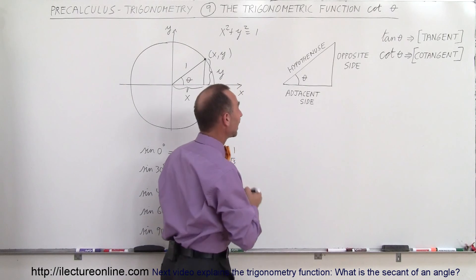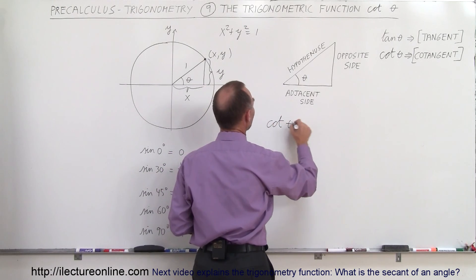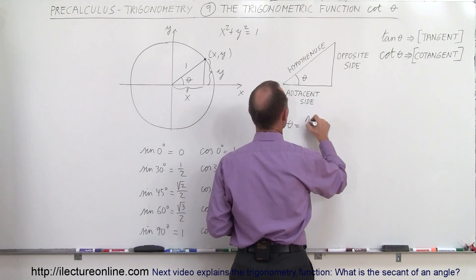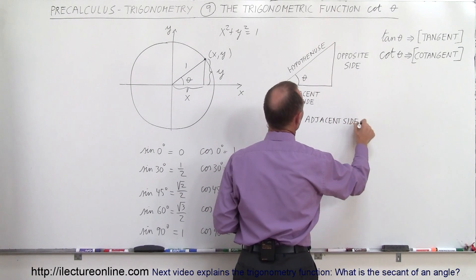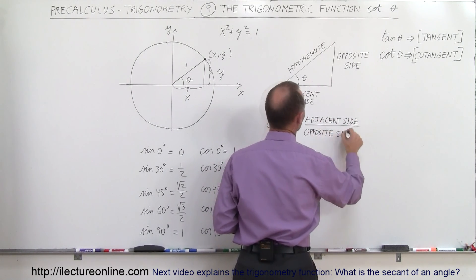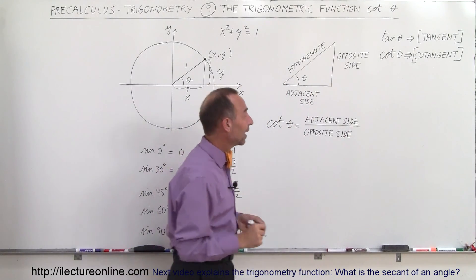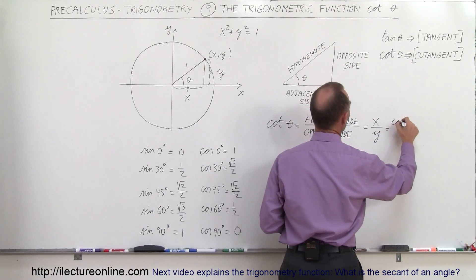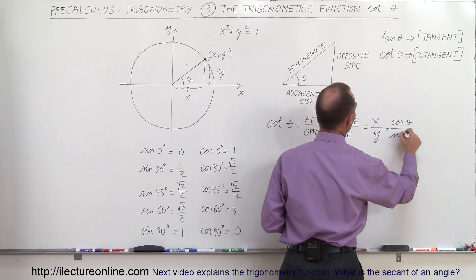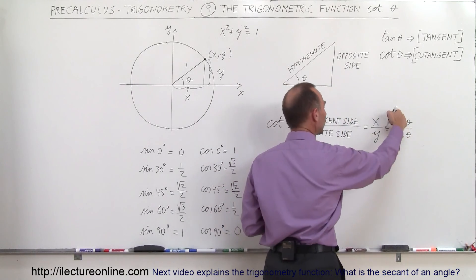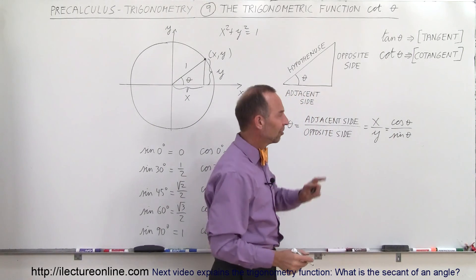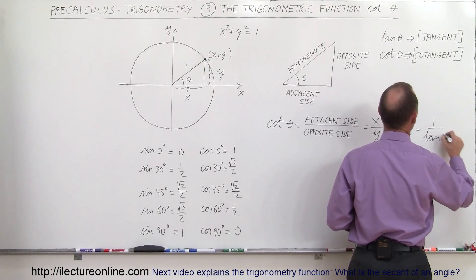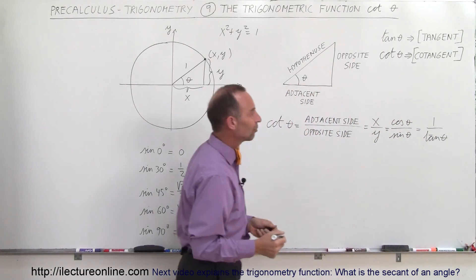The definition of the cotangent of theta is equal to the reverse of the tangent — it's equal to the adjacent side divided by the opposite side, exactly the inverse compared to the tangent of theta. The adjacent side can be defined as x and the opposite side as y. Since x equals the cosine of theta and y equals the sine of theta, the cotangent of theta is the ratio of cosine of theta divided by sine of theta, and since that's the inverse of the tangent, it equals 1 over the tangent of theta.